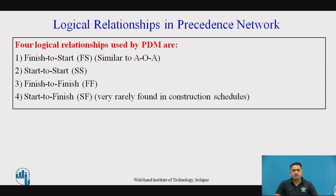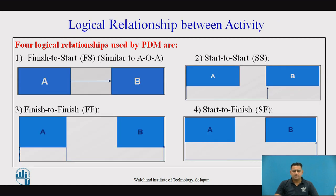Please go through that particular video for thorough information regarding all four relationships: Finish to Start, Start to Start, Finish to Finish, and Start to Finish. One important point — Finish to Start is mostly used in network diagrams, and Start to Finish is seen very rarely in overall projects. This slide presents the overall relationships between activities, showing successor and predecessor activities for each of the four relationship types.